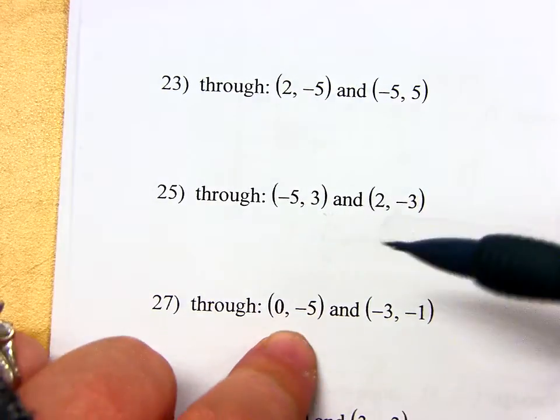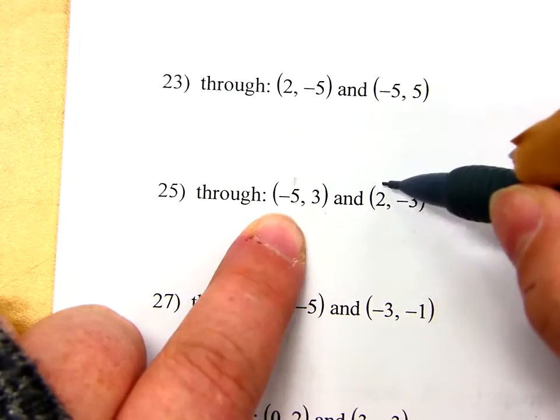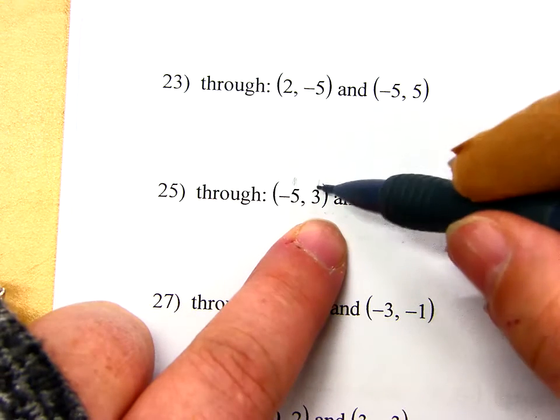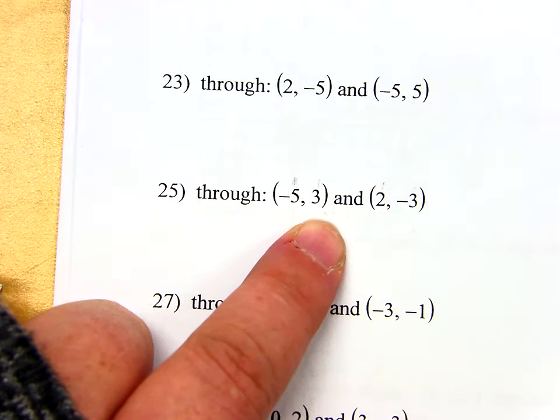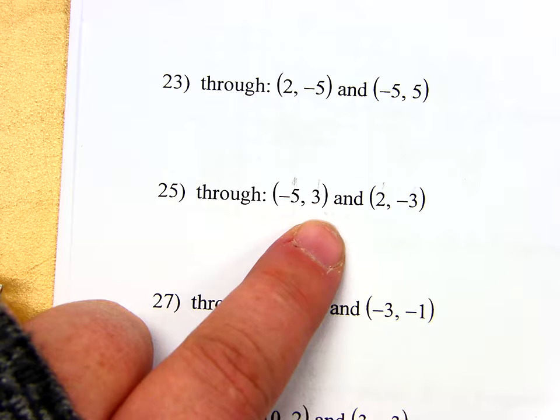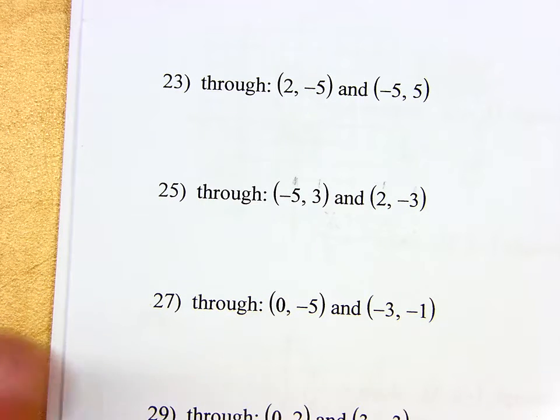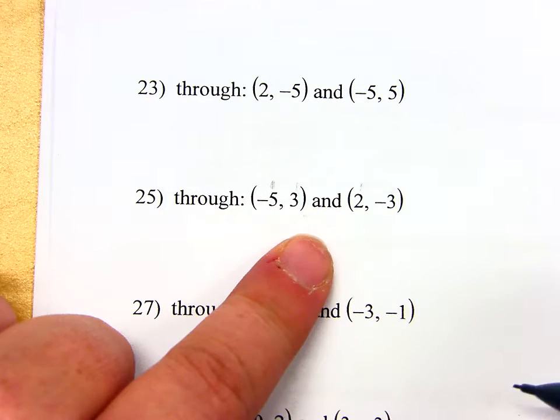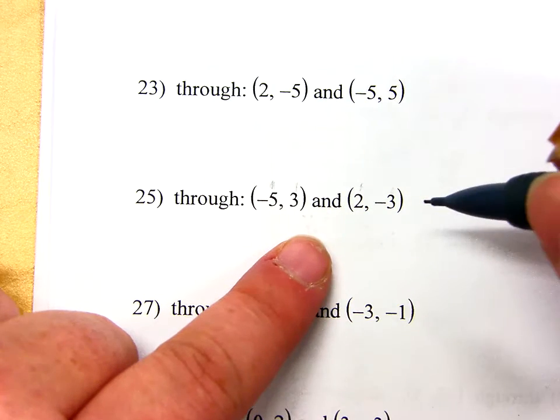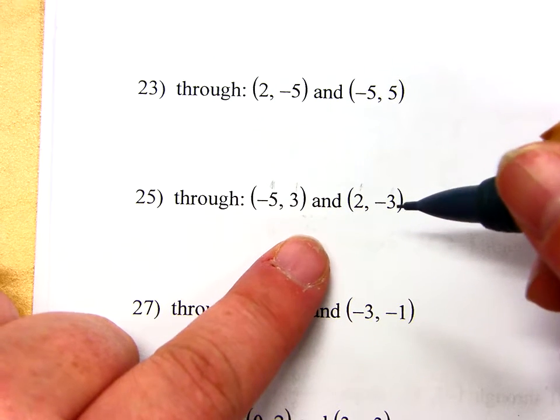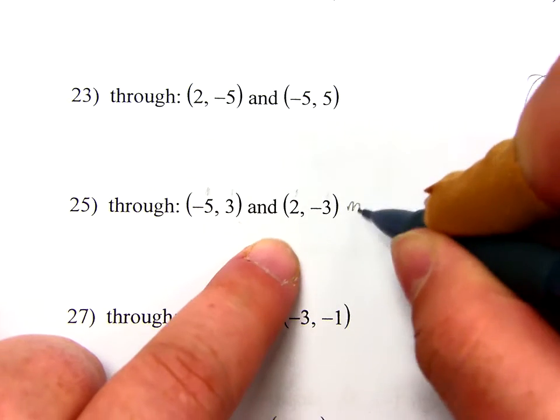25 is a problem where I just have 2 points. I'm going to check, do my X's match? No. Do my Y's match? I have 3 and negative 3, but they have to be exactly the same, and they're not. So I can't just get away with, oh, it's just X equals some number or Y equals some number. I actually have to do the work. So, in order to write the equation with a line, I need the slope. So I've got to find the slope first.